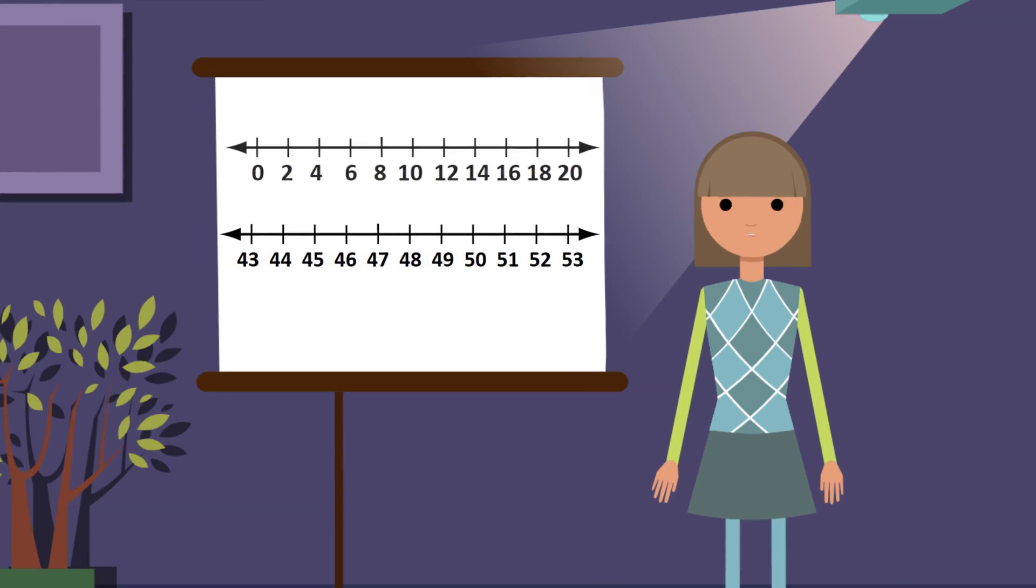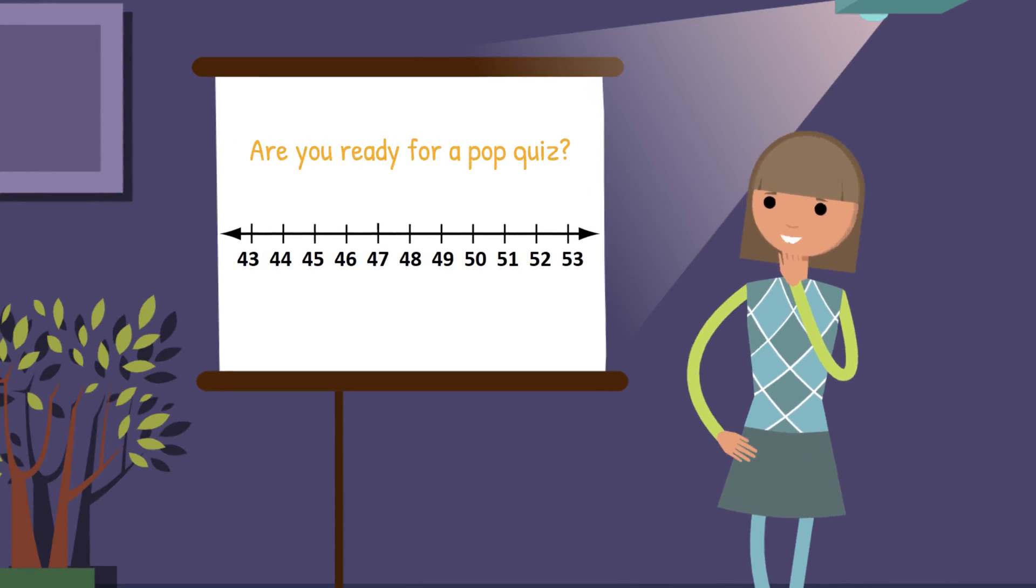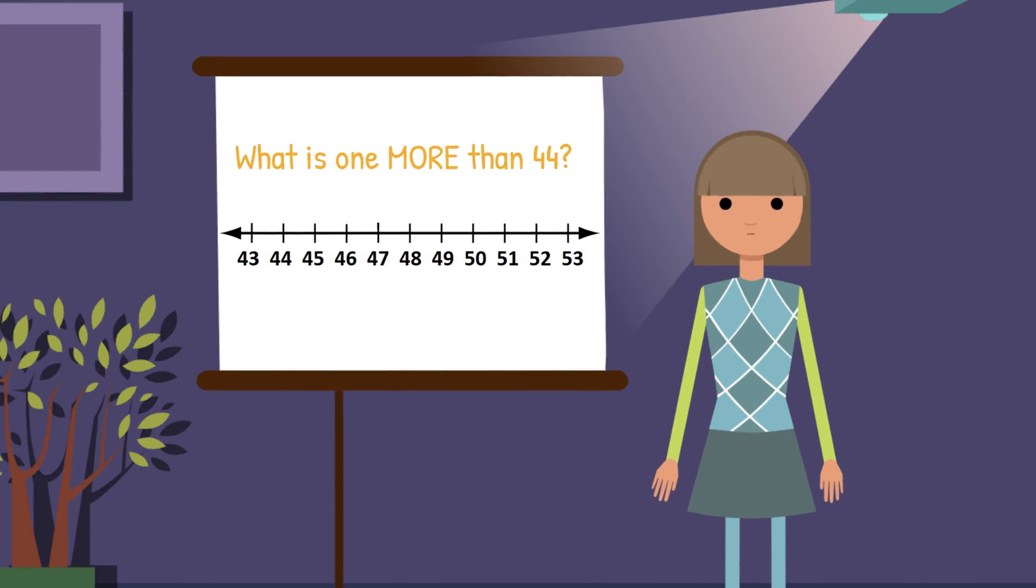Some number lines may count up by 2's or 5's, but this number line counts up by 1's. Are you ready for a pop quiz? Okay! Use the number line and say your answer out loud. What is 1 more than 44? 45 is correct!